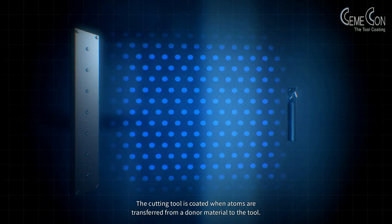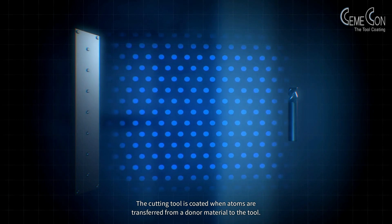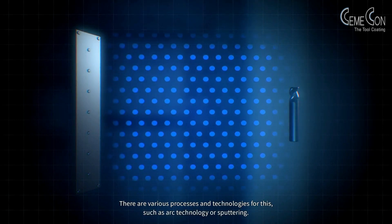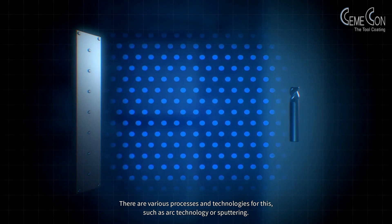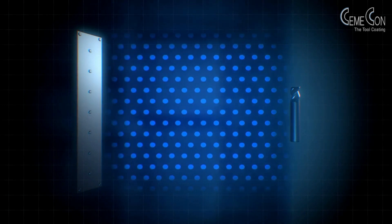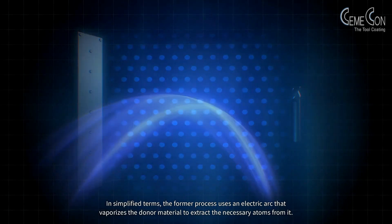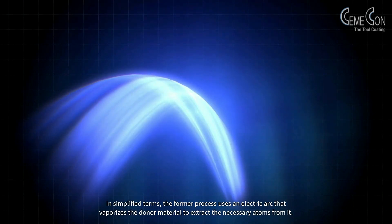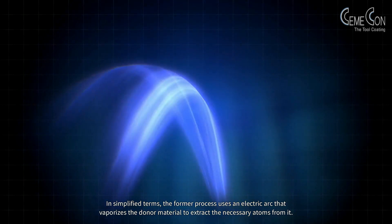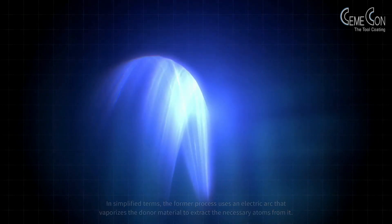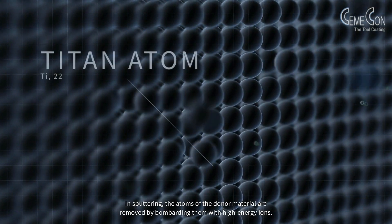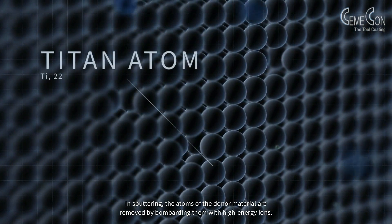The cutting tool is coated when atoms are transferred from a donor material to the tool. There are various processes and technologies for this, such as arc technology or sputtering. In simplified terms, the former process uses an electric arc that vaporizes the donor material to extract the necessary atoms from it. In sputtering, the atoms of the donor material are removed by bombarding them with high-energy ions.